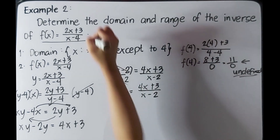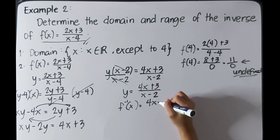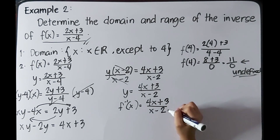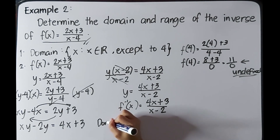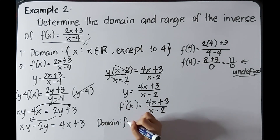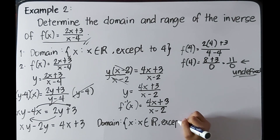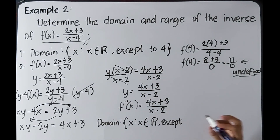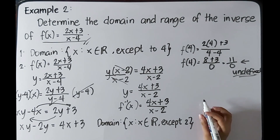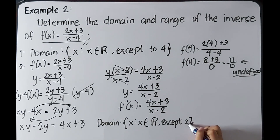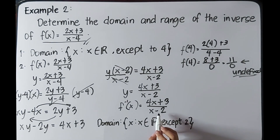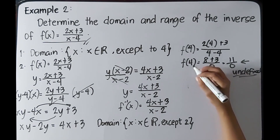The domain of this inverse function is x such that x is an element of real numbers except positive 2. Because when we substitute positive 2 into the denominator (x - 2), we get 2 - 2 = 0, which makes the function undefined or does not exist.